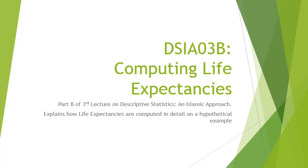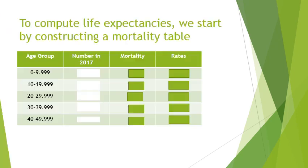Bismillahirrahmanirrahim. In this part B of the second third lecture on descriptive statistics and Islamic approach, we will explain in detail how life expectancies are computed using a hypothetical example. So the first step to compute life expectancy, we need a mortality table.